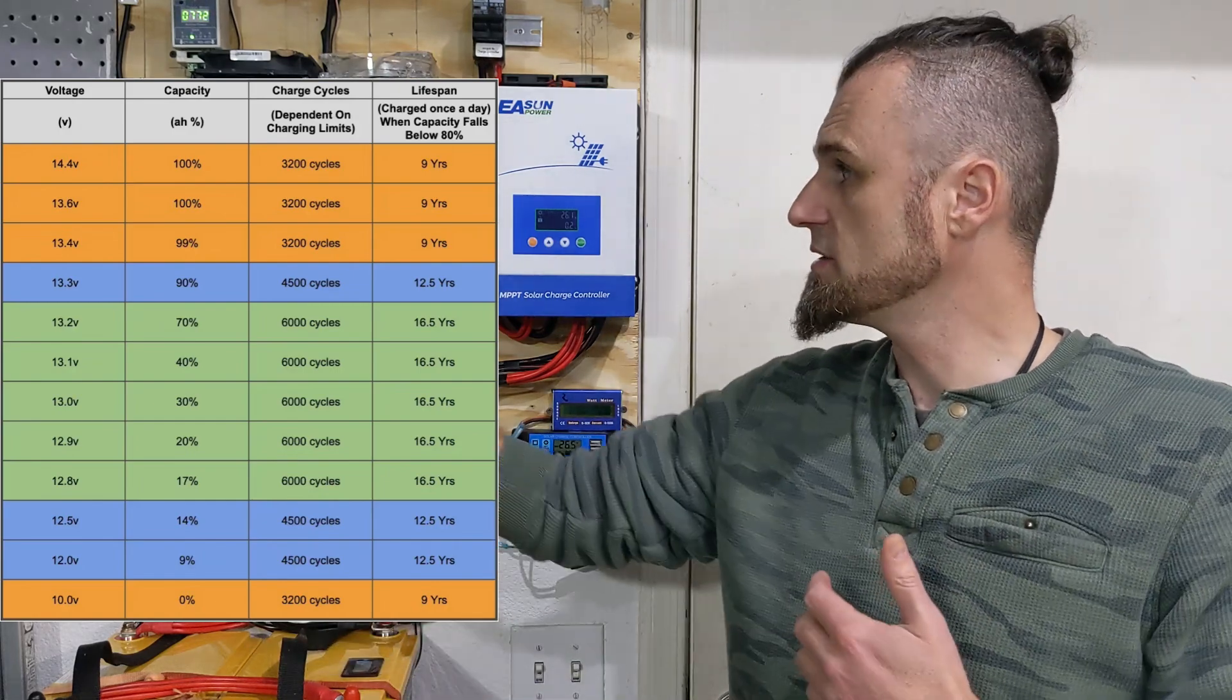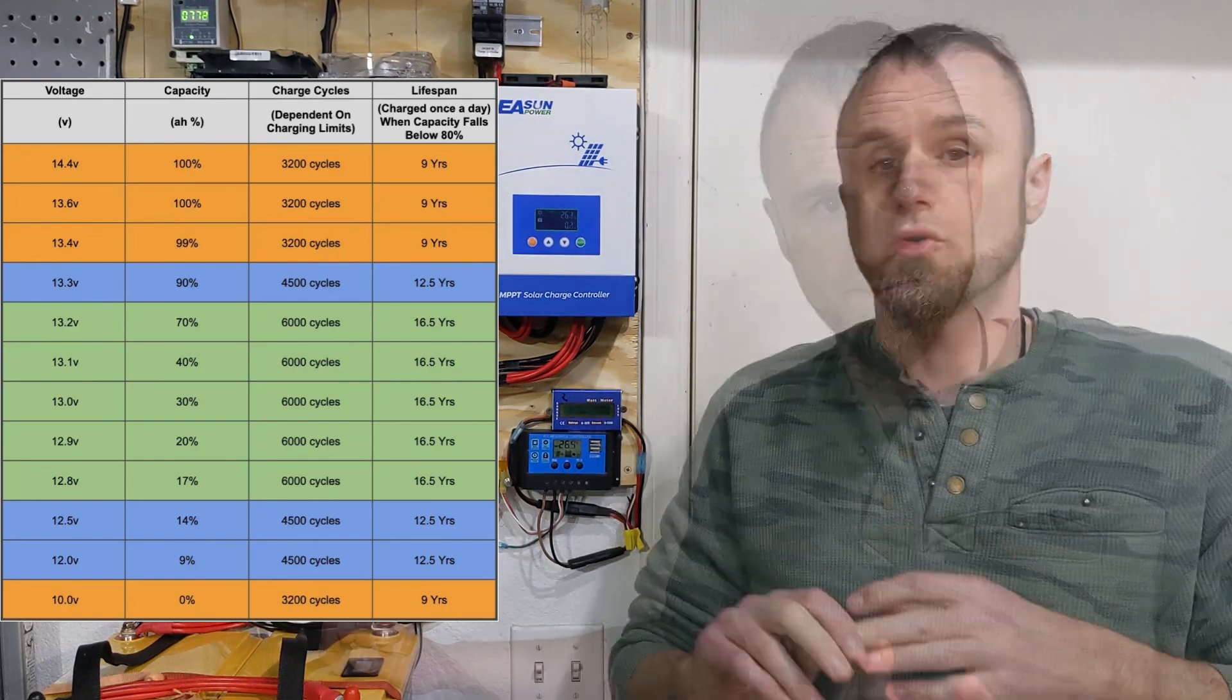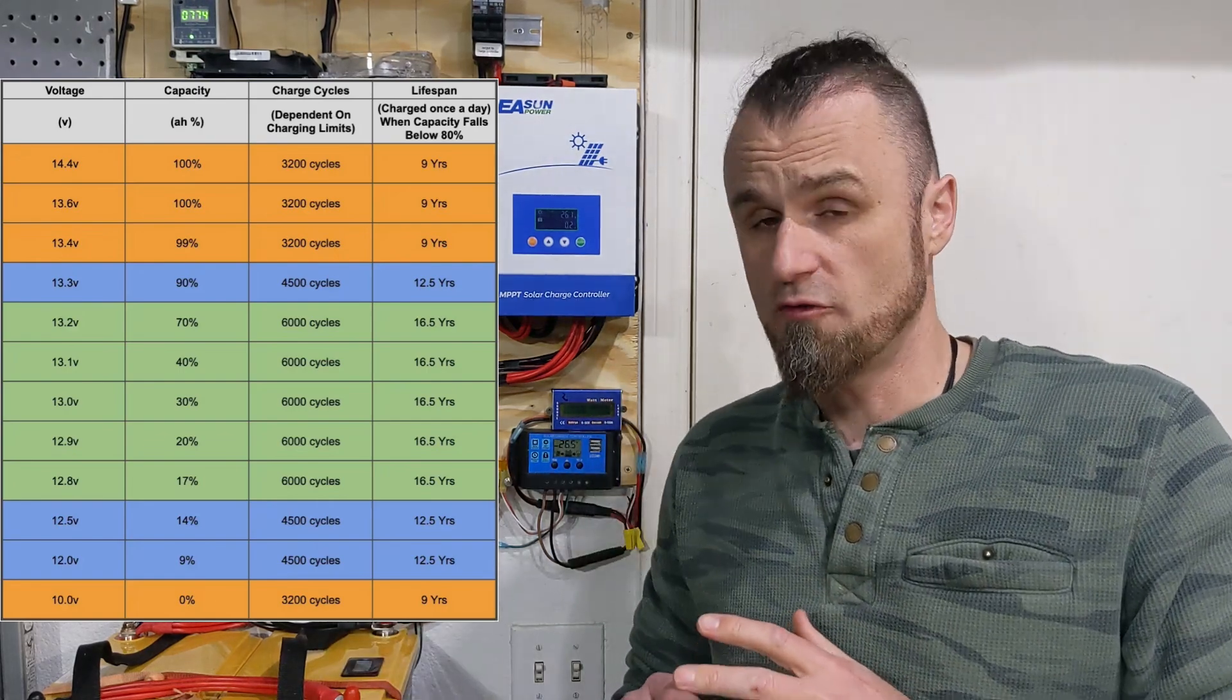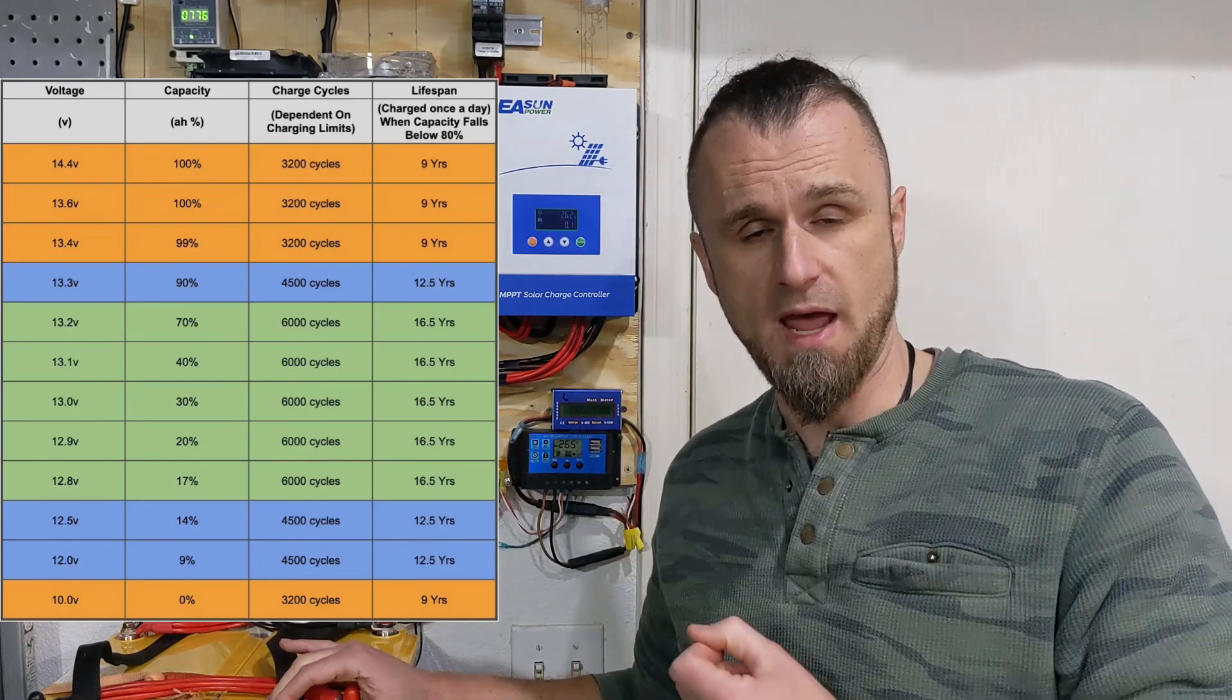Also, these grid tie inverters are designed to stop at 25 volts. 25 volts is 12.5, and these batteries, they like to rest around 12.8.